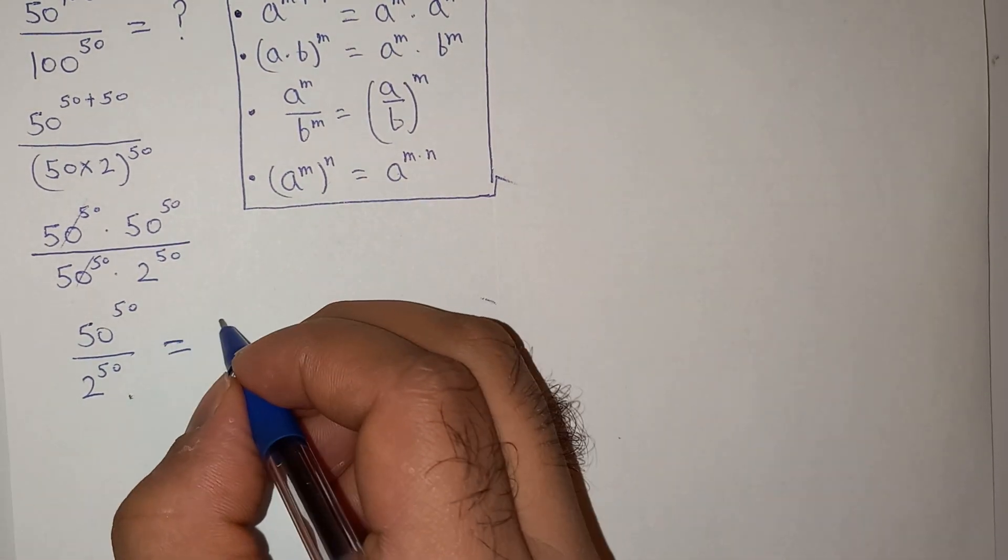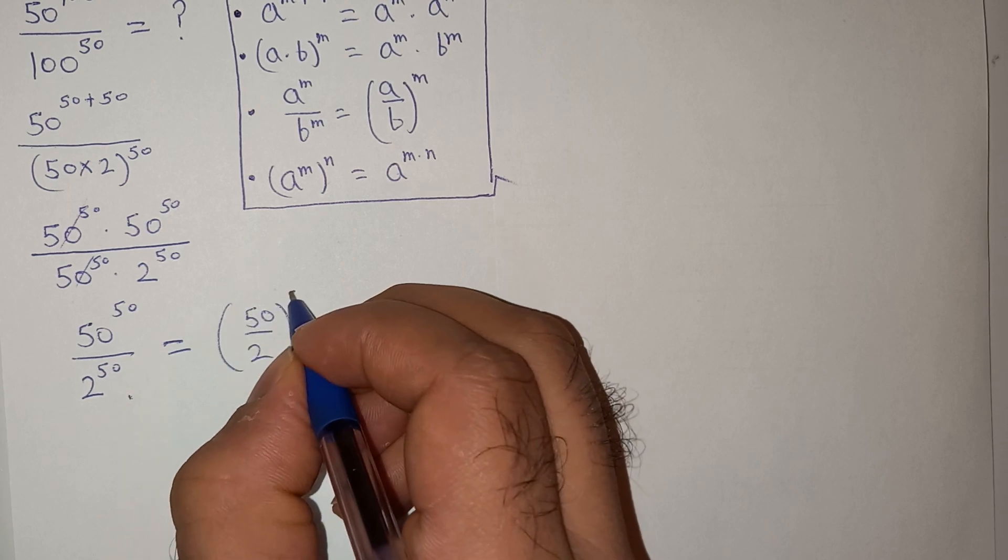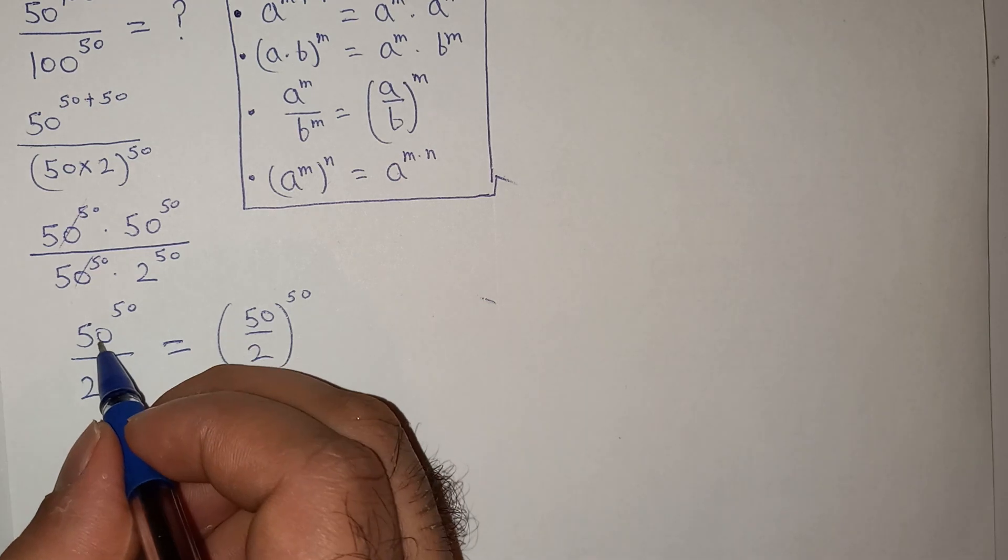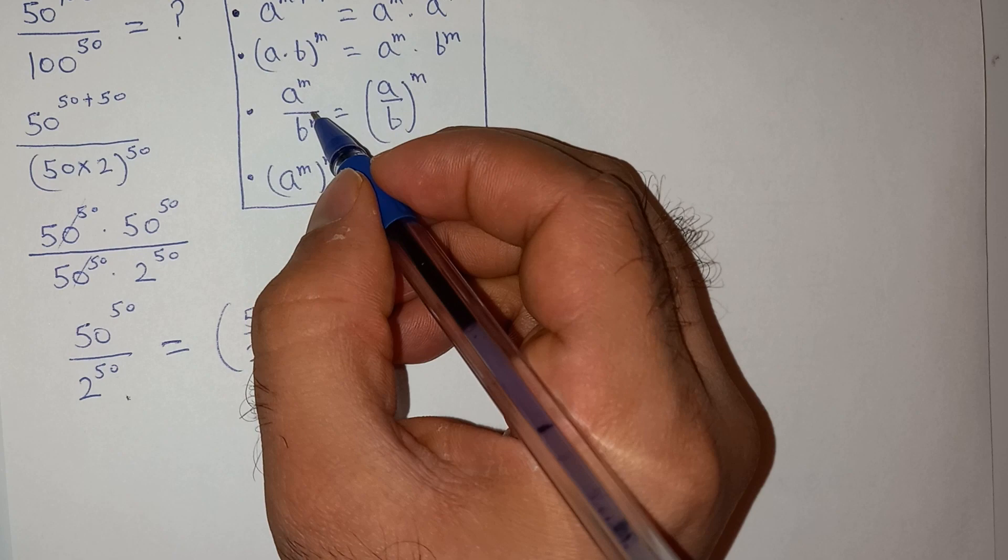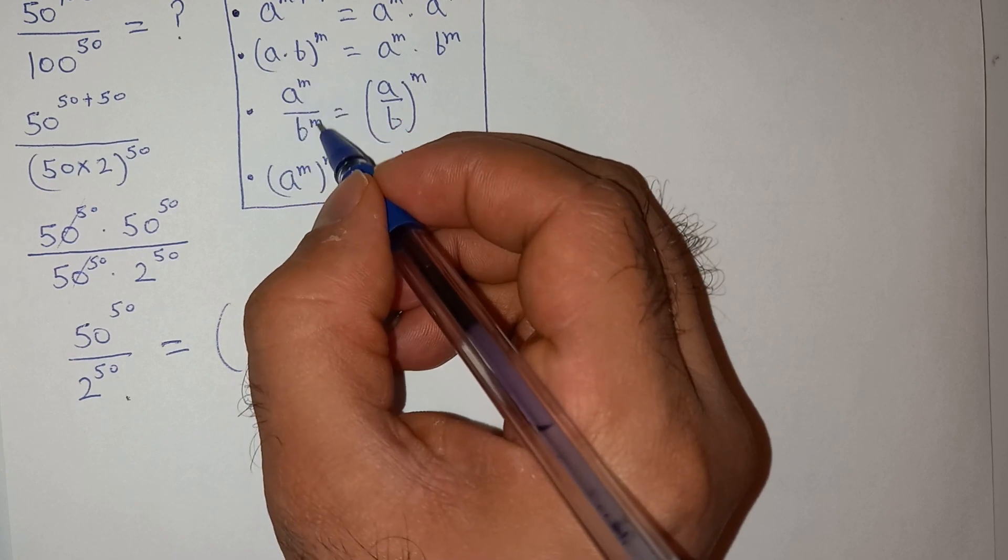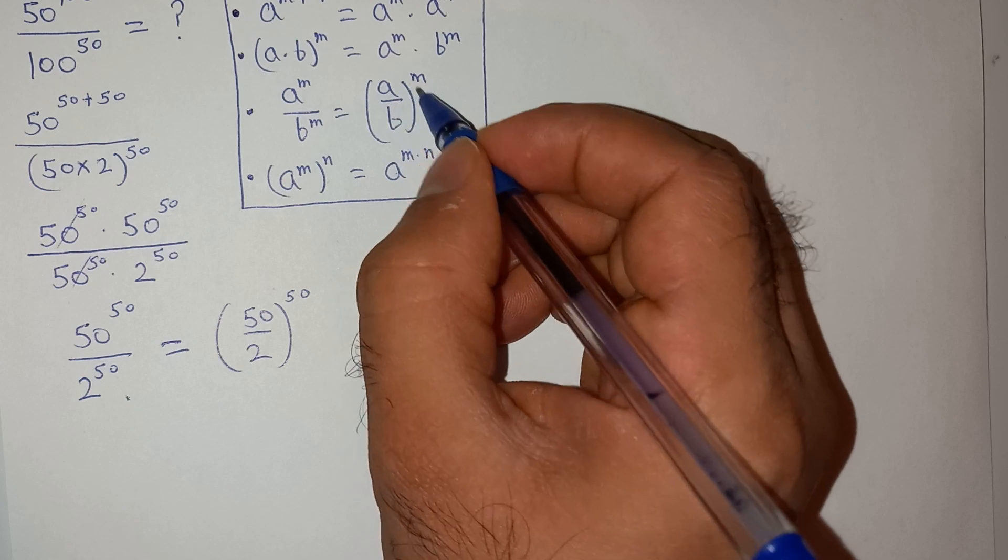I can write this as 50 divided by 2 power 50. As you see the bases are different but the exponents are same. So you can apply this rule: a power m divided by b power m equals bracket a by b power m.